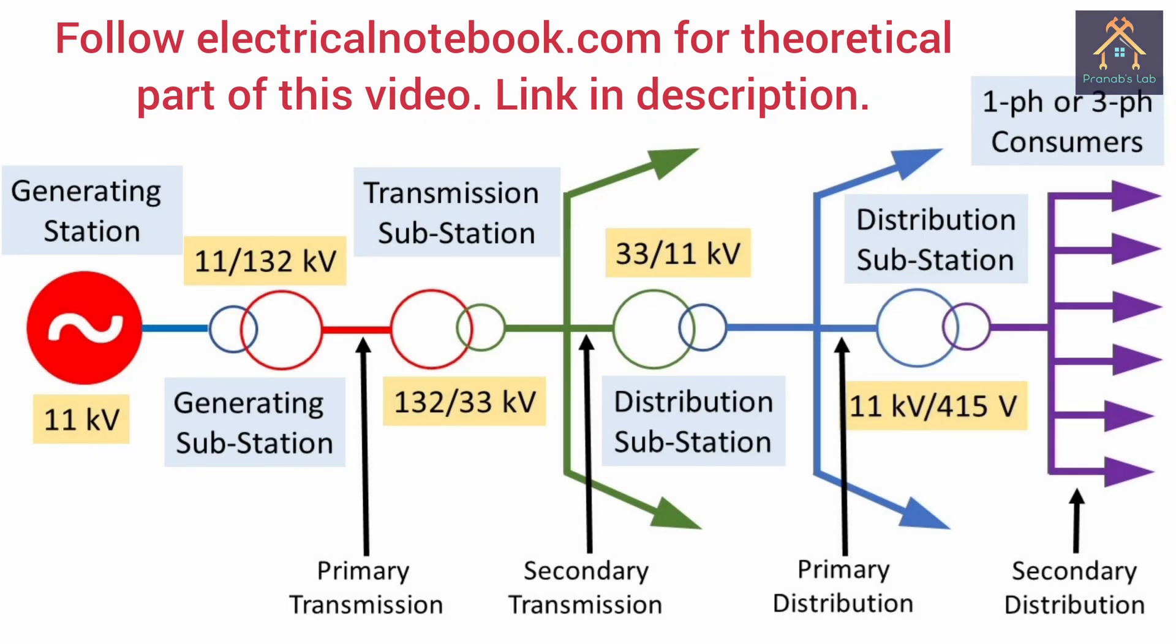Now, there is a question for you: why different kinds of voltage level, that is 132 kV, 11 kV, 33 kV, 415 V, are used in this power system? Please write it in the comment box. Till then, stay tuned with us. Jai Hind, Jai Bharat.